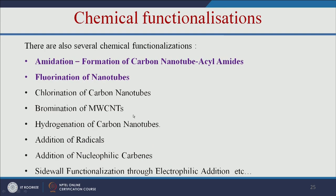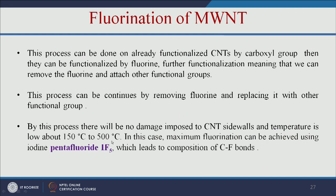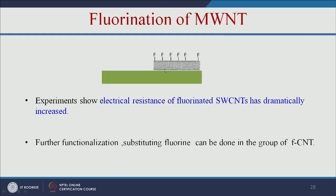For chemical functionalization, we will discuss amidation and fluorination. Amidation means addition of an amide group, but first the CNT must be functionalized with -COOH, followed by addition of the amide group. Fluorine can also be added using pentafluoride IF5. Adding a fluorine group increases electrical resistance, and the fluorine can be substituted with other chemical groups for various applications.